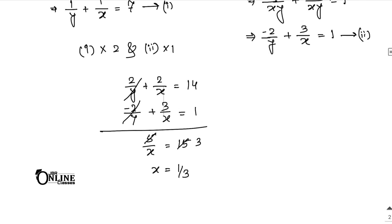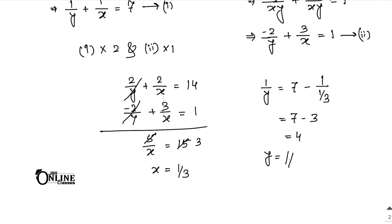To find y, use 1/y plus 1/x equals 7 with x equals 1/3: 1/y equals 7 minus 3 equals 4, so y equals 1/4.